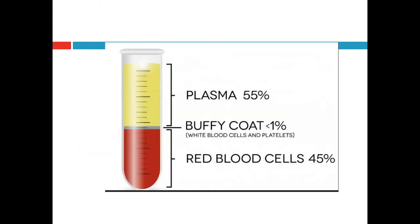The components of blood are: red blood cells, generally 45%; plasma, generally 55% (this is variable); and the buffy coat, which comprises about 1% and consists of white blood cells and platelets.